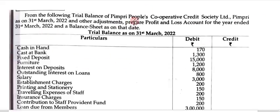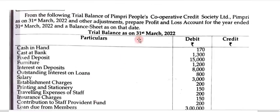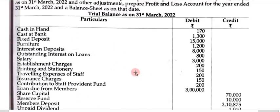You can see on the screen that this is the example of Pimpri People's Cooperative Society. From the following trial balance of Pimpri People's Cooperative Credit Society, Pimpri, as on 31st March 2022 and other adjustments, prepare the profit and loss account for the year ended 31st March 2022 and a balance sheet as on that day.